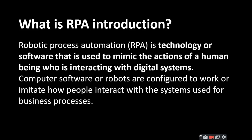Today I am going to tell you about Robotic Process Automation. What is Robotic Process Automation? It is a technology or software used to mimic the actions of a human being interacting with a digital system. Computers, software, and robots are configured to work and imitate how people interact with systems for business purposes. Robots can configure how people integrate their system into their business process.